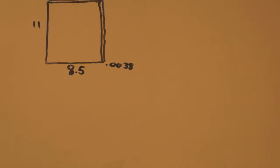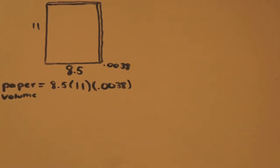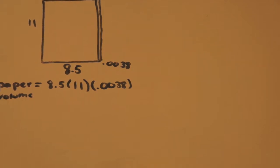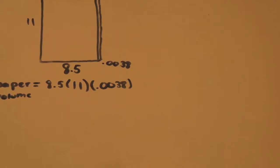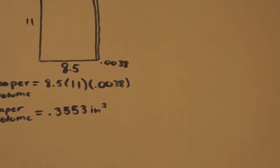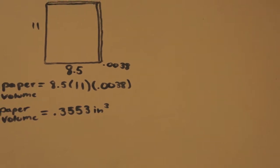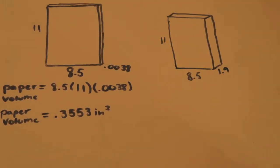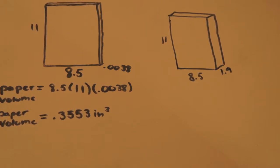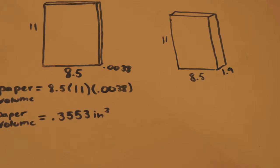Well, first of all, I know that the volume of a single sheet of paper is 8.5 inches wide by 11 inches tall by 0.0038 inches in depth. The formula for volume is area of the base times the height, so I can calculate the volume by multiplying the three numbers together. I have figured out that the volume of a single sheet of paper is 0.3553 inches cubed. I measured the dimensions of a ream of paper and figured out that it is 8.5 inches wide by 11 inches tall by 1.9 inches in depth.